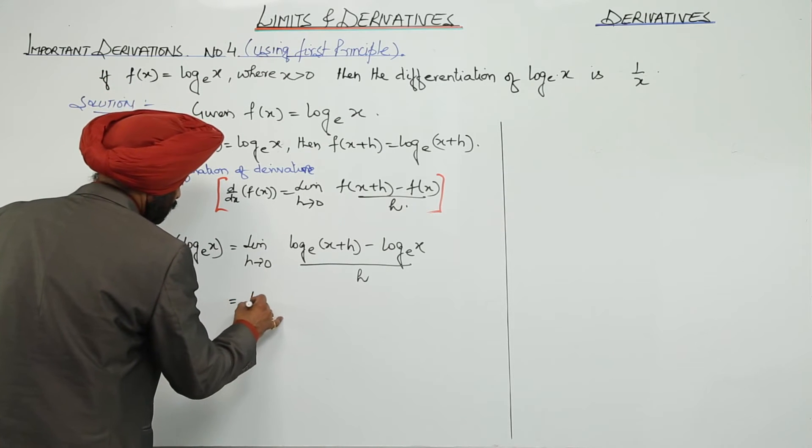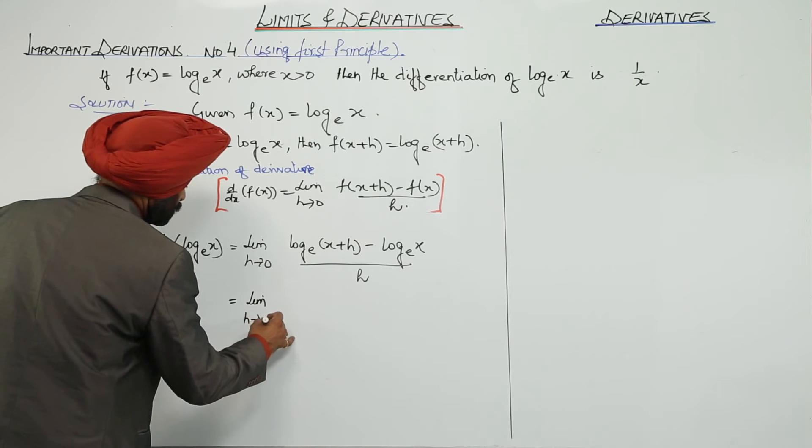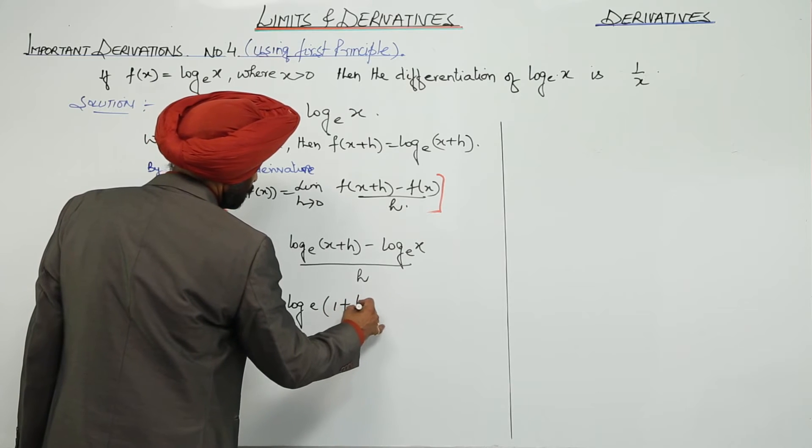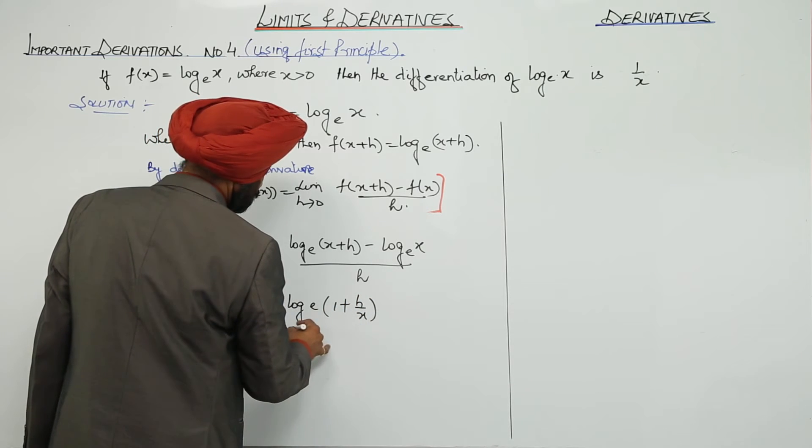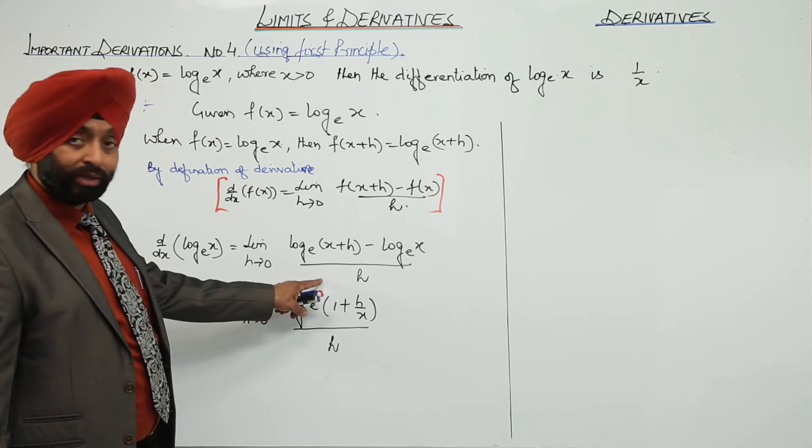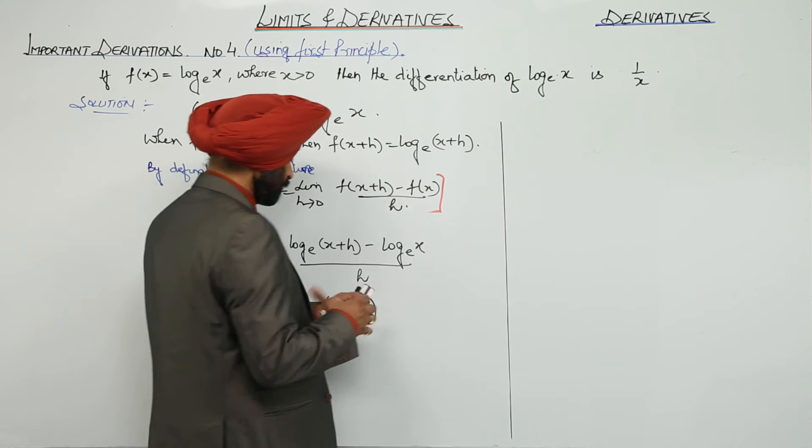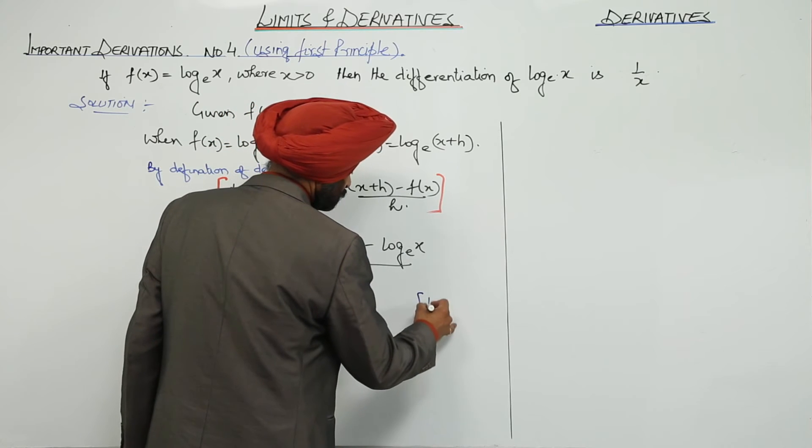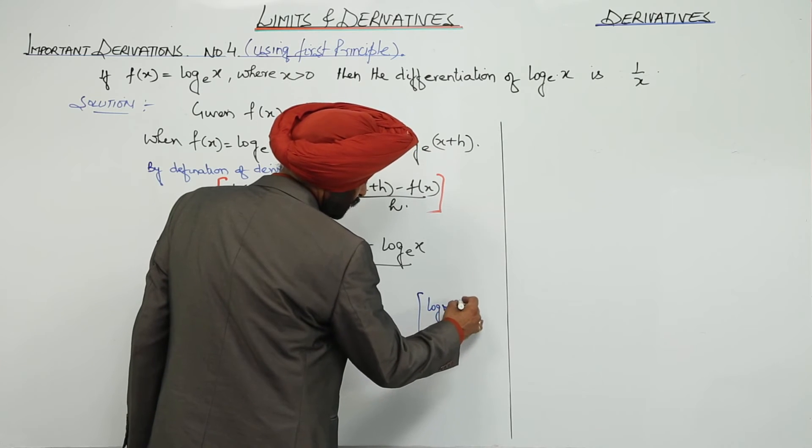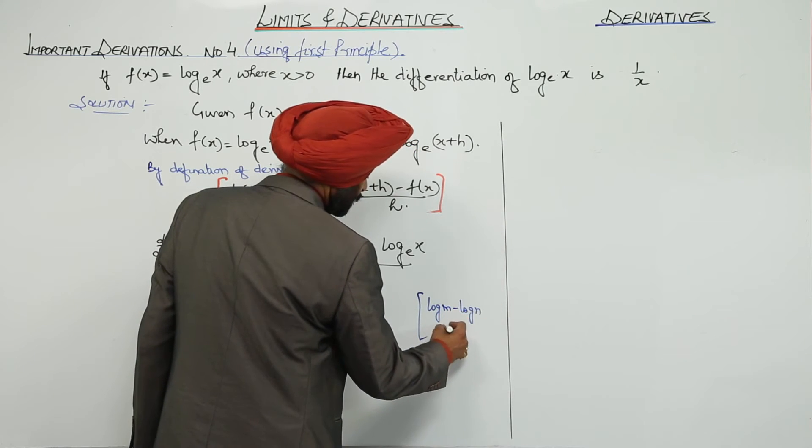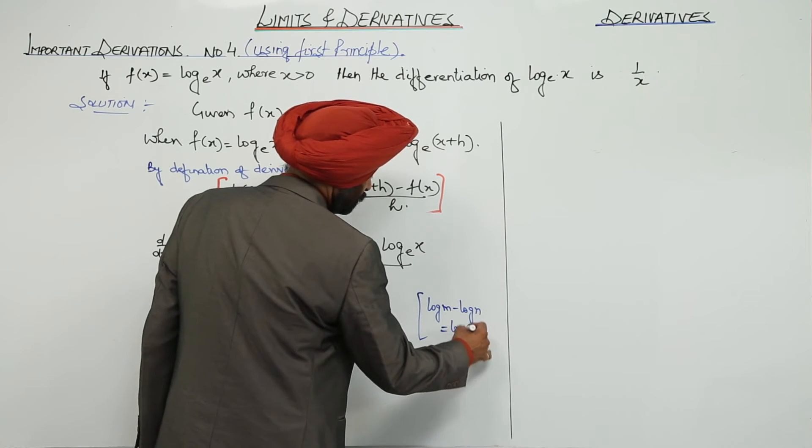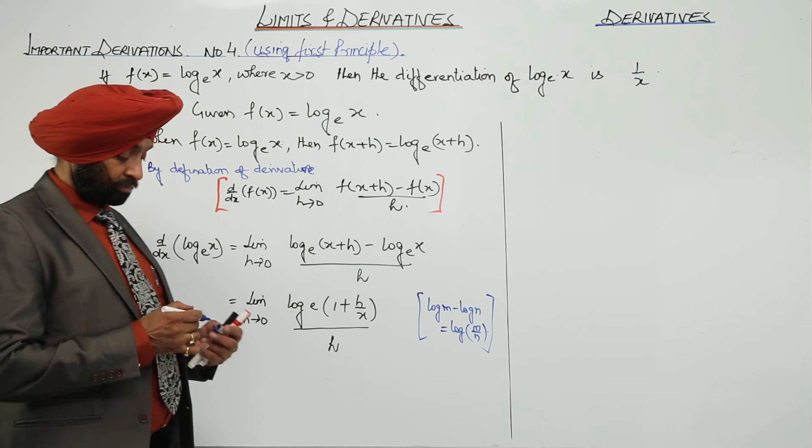Now, this becomes limit h approaches to 0, log e (1 plus h upon x) upon h. Now, what I have used? I have used the property here for log. Now, suppose we are having log m minus log n. Now, we are writing this is equal to log (m upon n). So, we have used here this property.